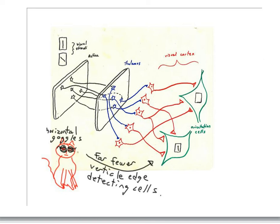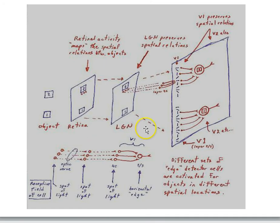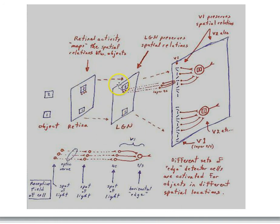To reinforce this idea of place coding, let's take a look at a more complicated diagram. Here we have the retina again — a two-dimensional sheet of light-sensitive cells. Here's our thalamus, LGN, lateral geniculate nucleus of the thalamus. And here's our V1, or area 17, primary visual cortex. We've got some objects in the world, object 1 and 2.